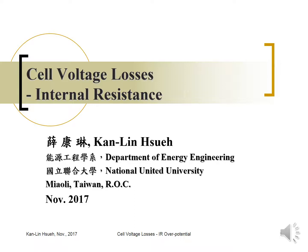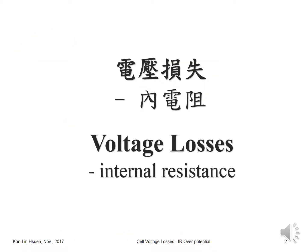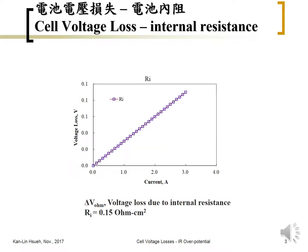Internal resistance is one of the cell voltage losses. It is usually due to poor conductivity inside the battery, on the terminal, or in the electrode, and causes voltage loss. Internal resistance is simply an ohmic loss — some people call it ohmic loss or IR overpotential. The cell voltage loss is linearly proportional to the current or current density because it follows Ohm's law.